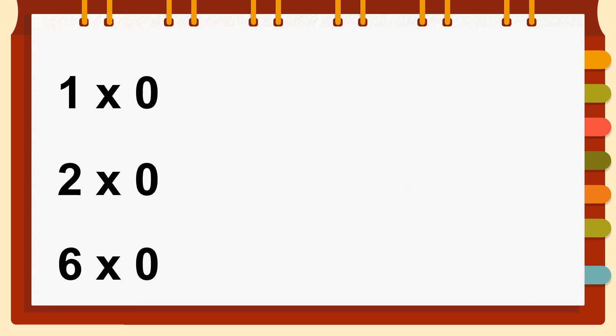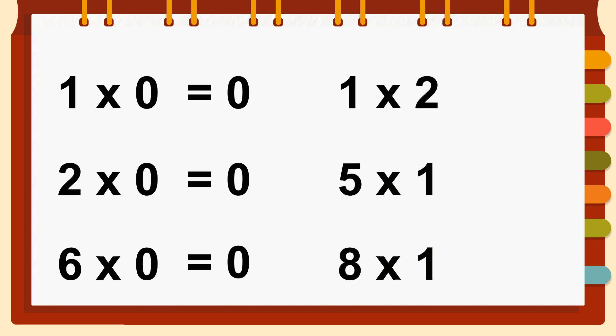Now let's practice the multiplication tricks we've learnt. Any number multiplied by zero is zero: one times zero equals zero, two times zero equals zero, six times zero equals zero. And for multiplication by one, any number multiplied by one stays the same: one times two equals two, five times one equals five, eight times one equals eight.